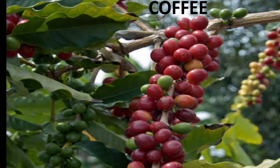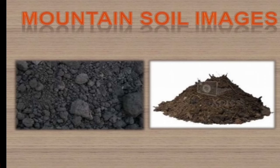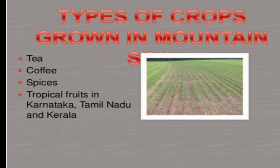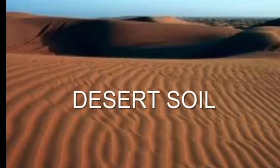Mountain soil: from the name itself, we know that mountain soils are found on the slopes of mountains and hill slopes. It is formed by the deposition of organic matter from forests and is rich in humus content. Areas include Assam, Kashmir, Sikkim, and Arunachal Pradesh. Major crops grown include tea, coffee, spices, and tropical fruits.